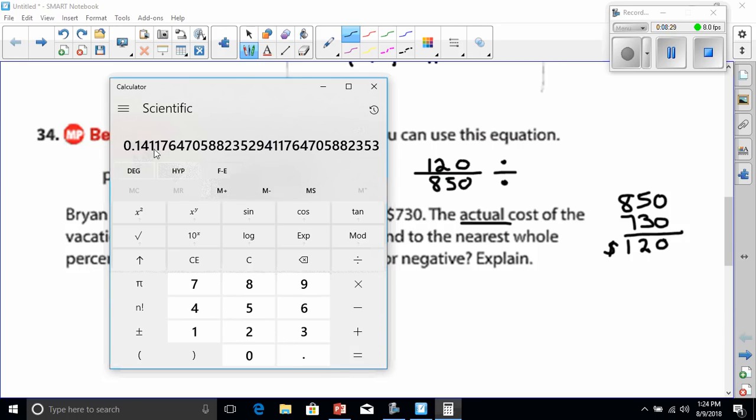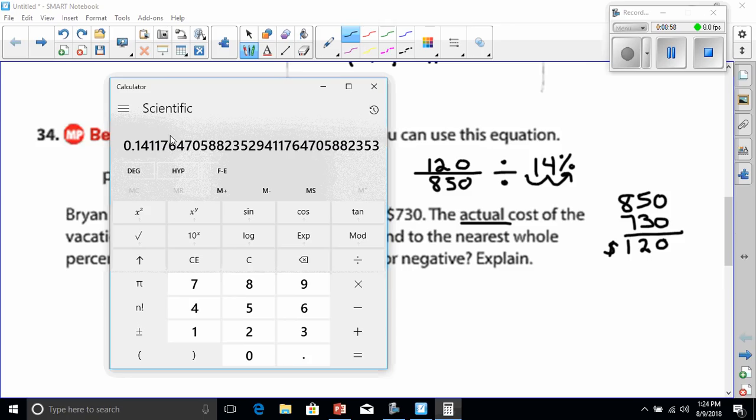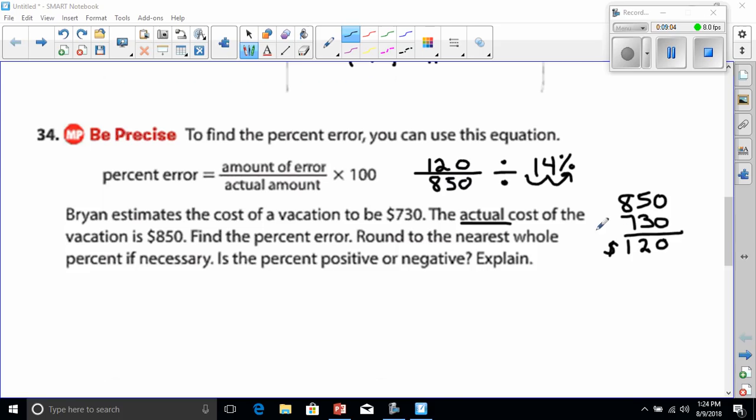0.14, and it says to the nearest whole percent. Percent is going to be the first two numbers because whenever we do percents we're moving our decimal over twice, and that's going to give us 14. But remember it says to the nearest whole percent and it was 0.141, and we would round that one off. It would just be 0.14, so the answer to this question would be 14 percent. See you in class, have a great night.